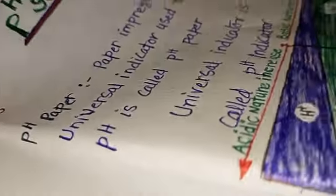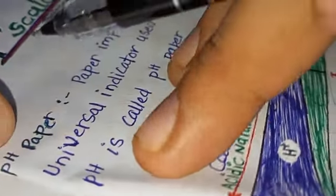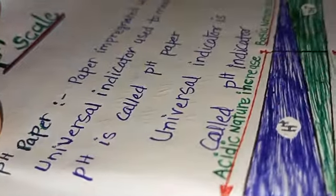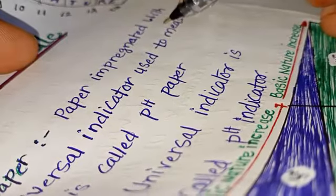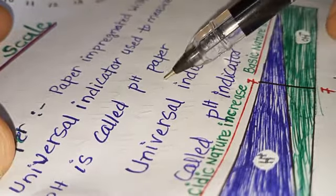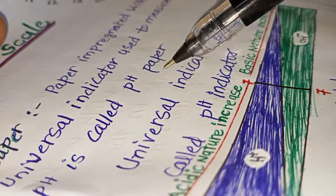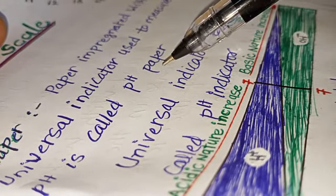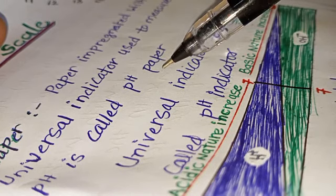This is how we can understand a complete pH scale. Now let us study about pH paper. A paper impregnated with universal indicator used to measure pH is called pH paper. When we take a filter paper and dip it into the universal indicator and then dry it, we can get the pH paper.